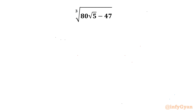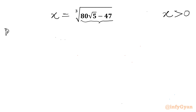Welcome back to Infigyan friends. In this video we have a very interesting question from Radical Maths. We have to evaluate the cube root of 80 root 5 minus 47. Let us get started by writing this cube root equal to x. The condition on x is that x is always positive, as this quantity is positive. I will be solving this question in two ways, so let me write method number 1.